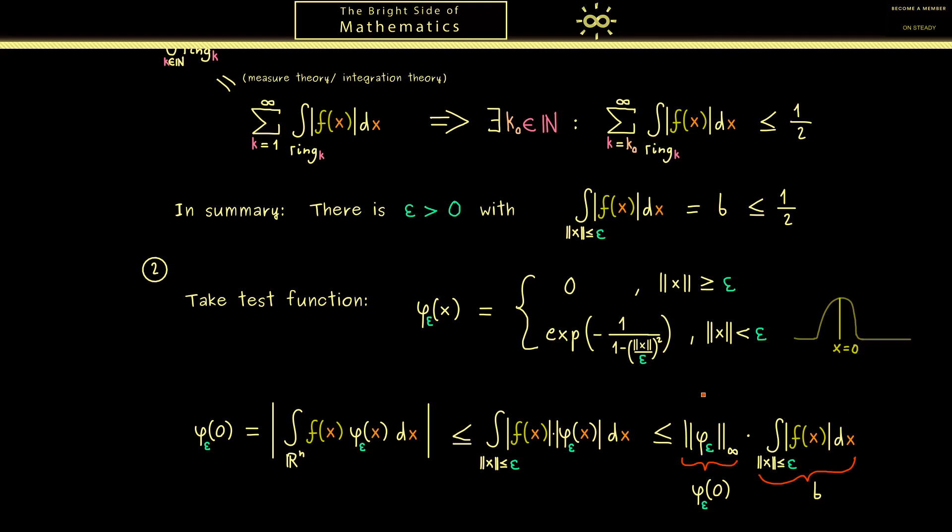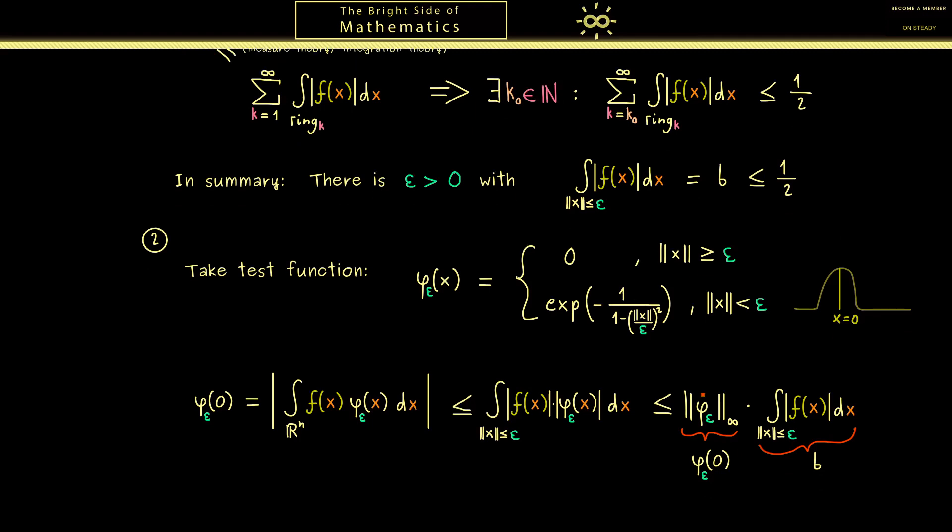Which means we have an inequality which can't be satisfied. So we have a positive number which does not get smaller when we multiply it with 1 half. And such a positive real number does not exist. And this is indeed our wanted contradiction.